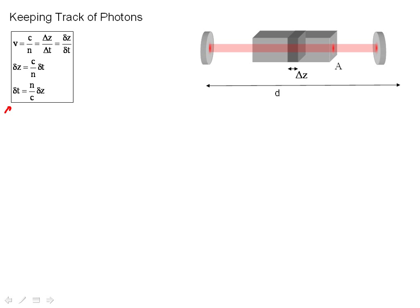So here's how we do it. In this box, you just see some relations between velocity, the speed of light, and the index of refraction, and how we convert between delta z's and delta t's. That's pretty obvious.